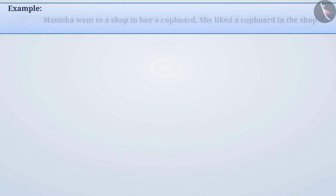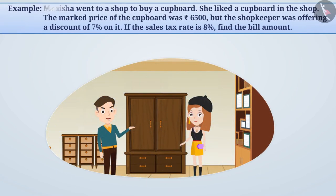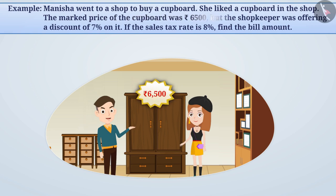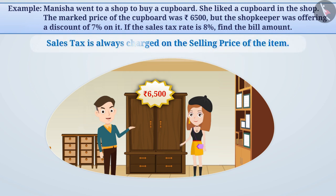Next example. Manisha went to a shop to buy a cupboard. She liked a cupboard whose marked price was 6,500 rupees, but the shopkeeper was offering a discount of 7% on it. If the sales tax rate is 8%, find the bill amount. Keep in mind that sales tax is always charged on the selling price of the item.